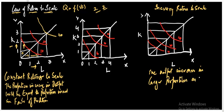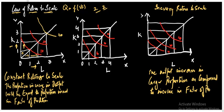In the case of increasing returns to scale, output increases in a larger proportion as compared to the increase in factors of production — that is, capital and labor. As I move from 0 to 1, my production is 10. Then as I move from 1 to 2, the isoquant is lower than this point.